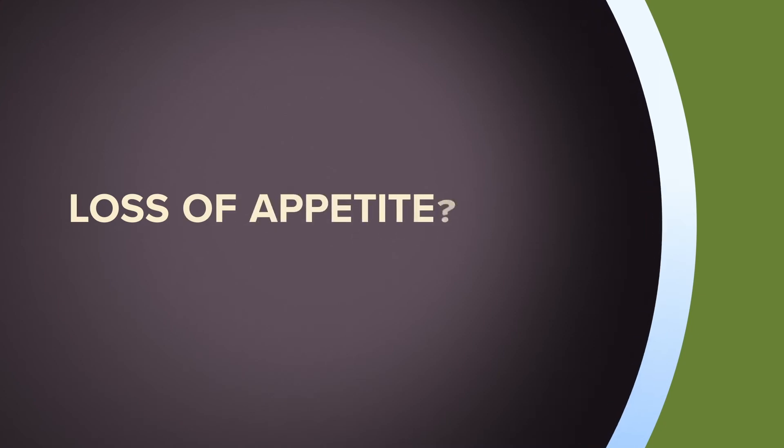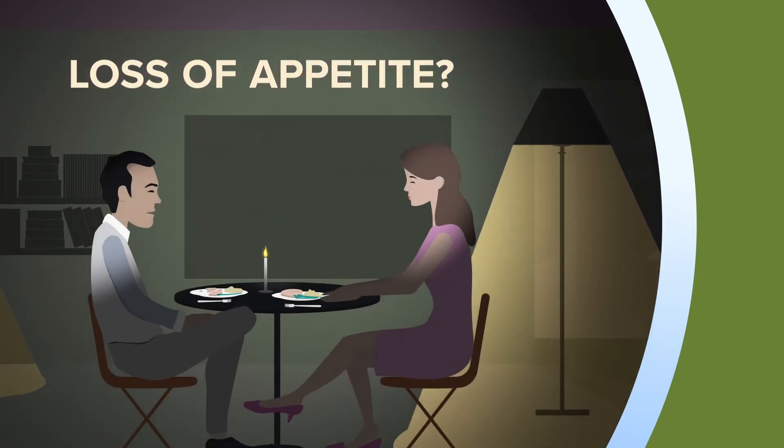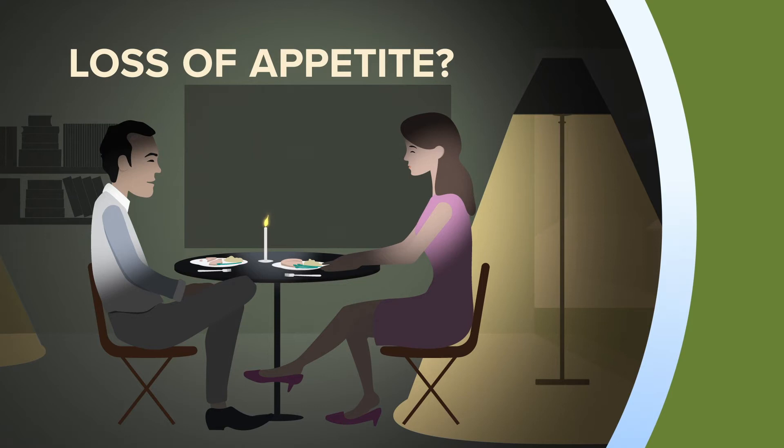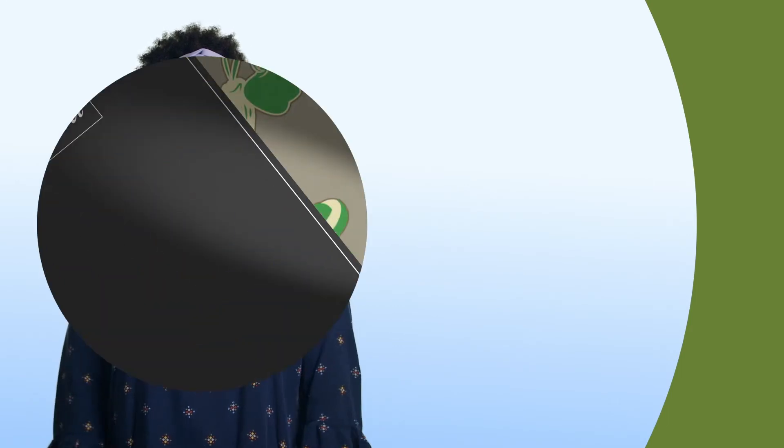Loss of appetite: try a candlelit dinner or picnic on the back porch, or eat somewhere new. You could also eat meals at a slower pace with friends or family, or while watching TV or listening to music. Distractions can be a good thing during this time.